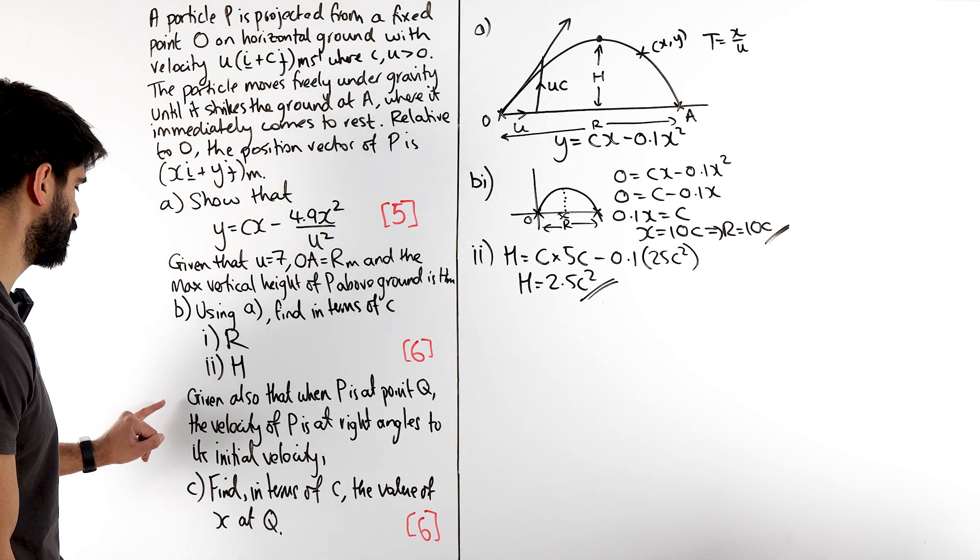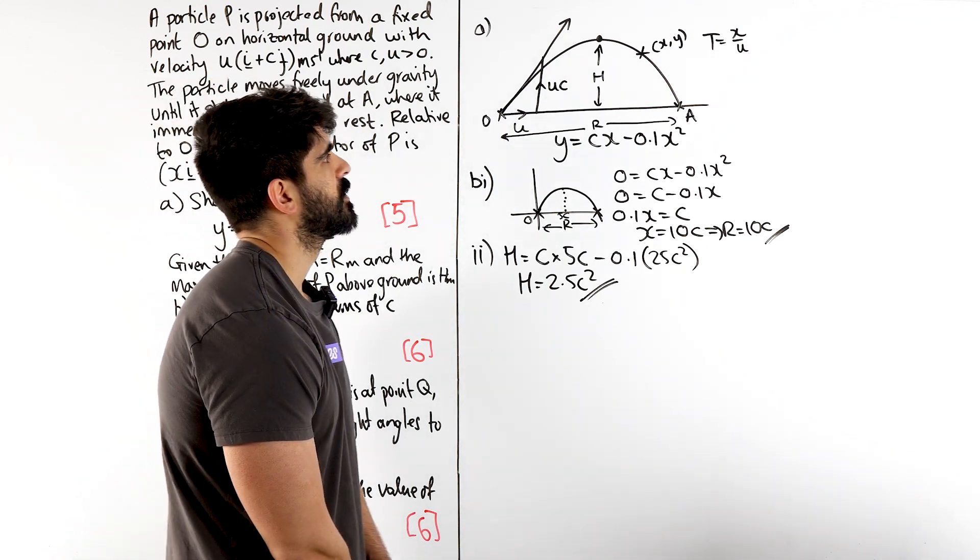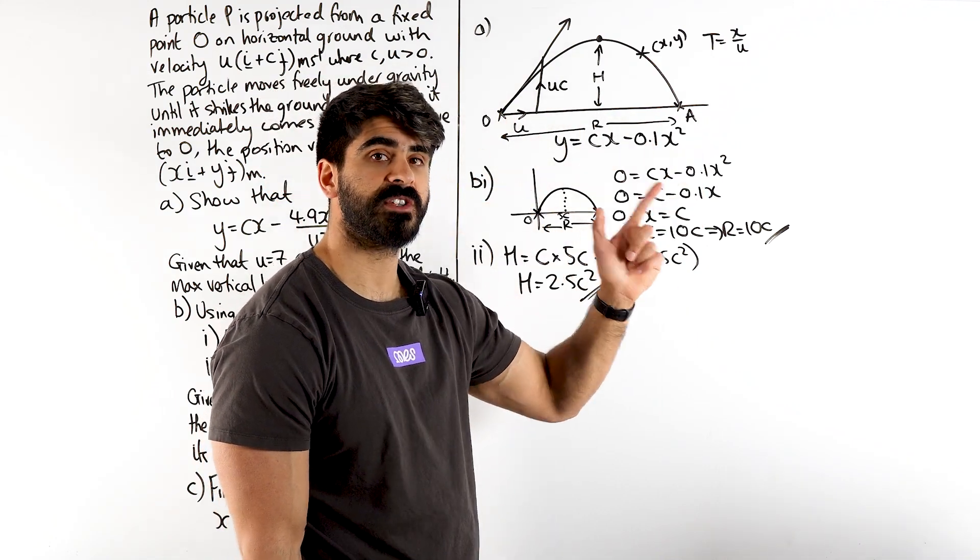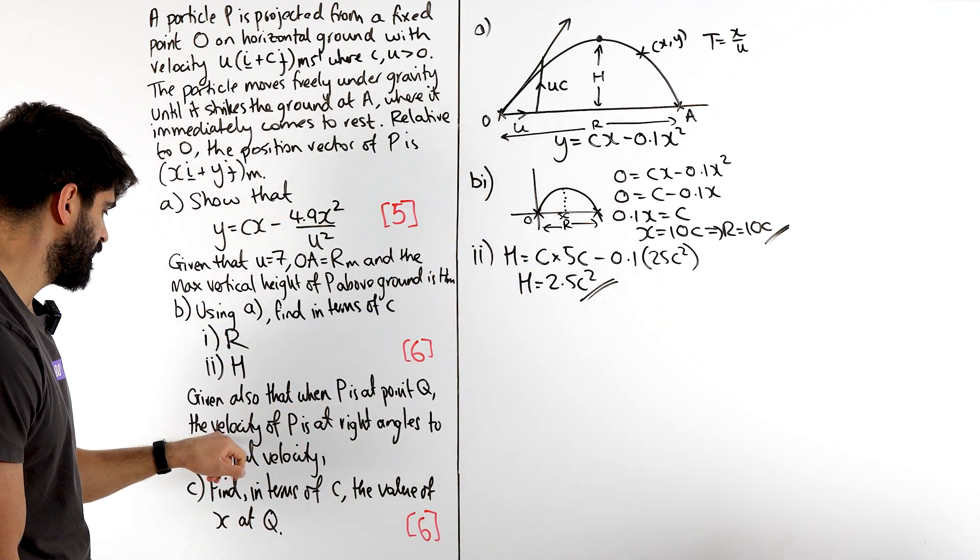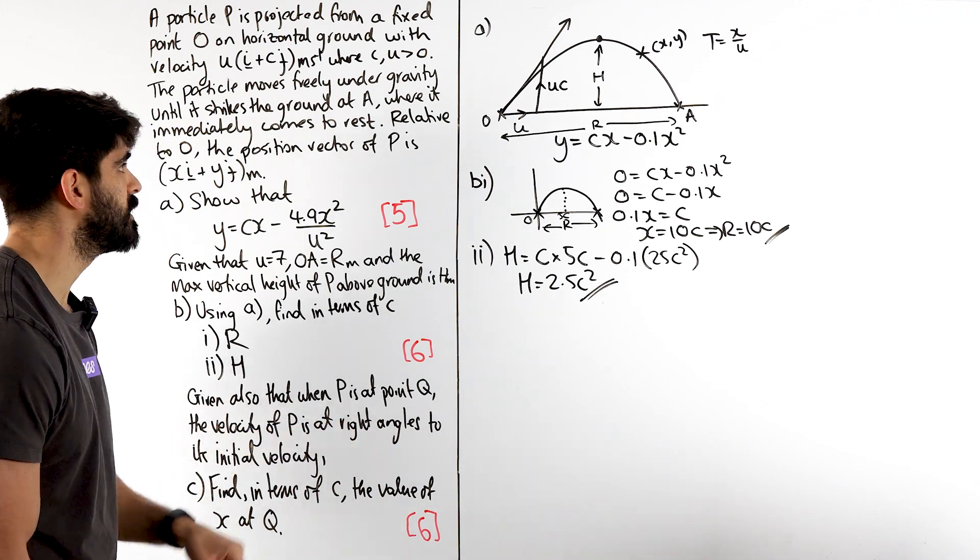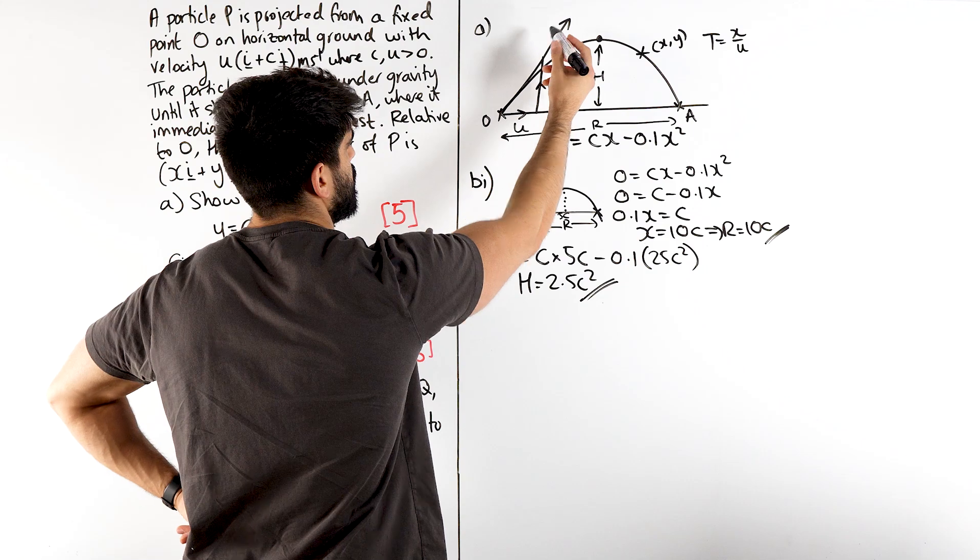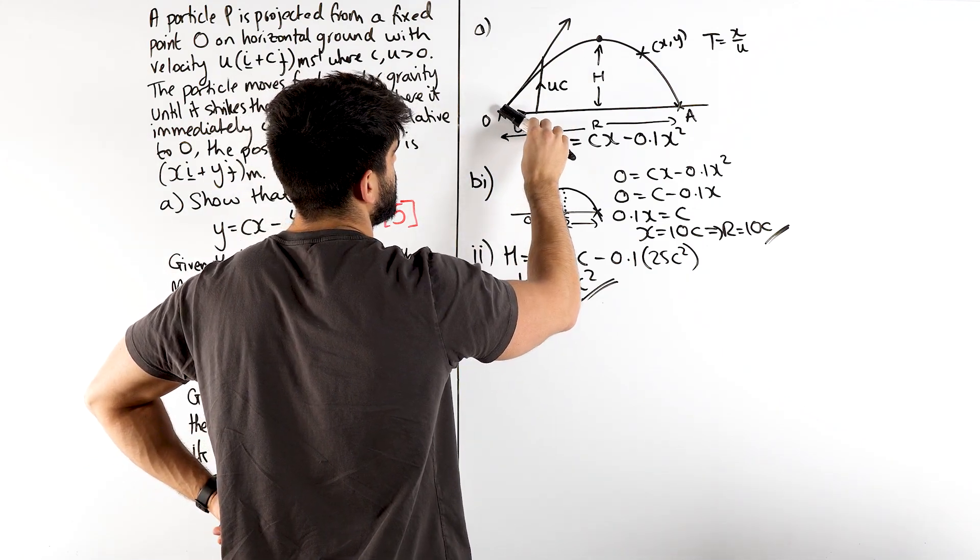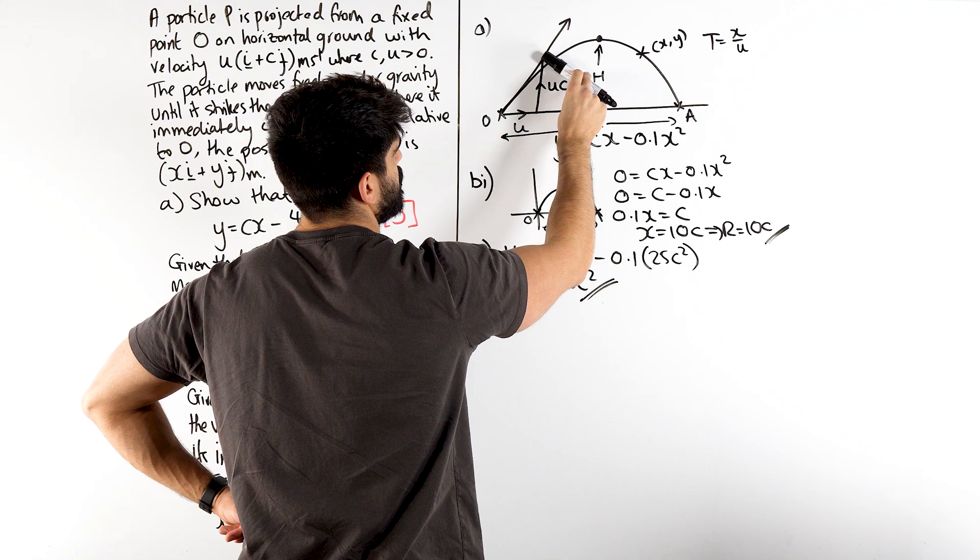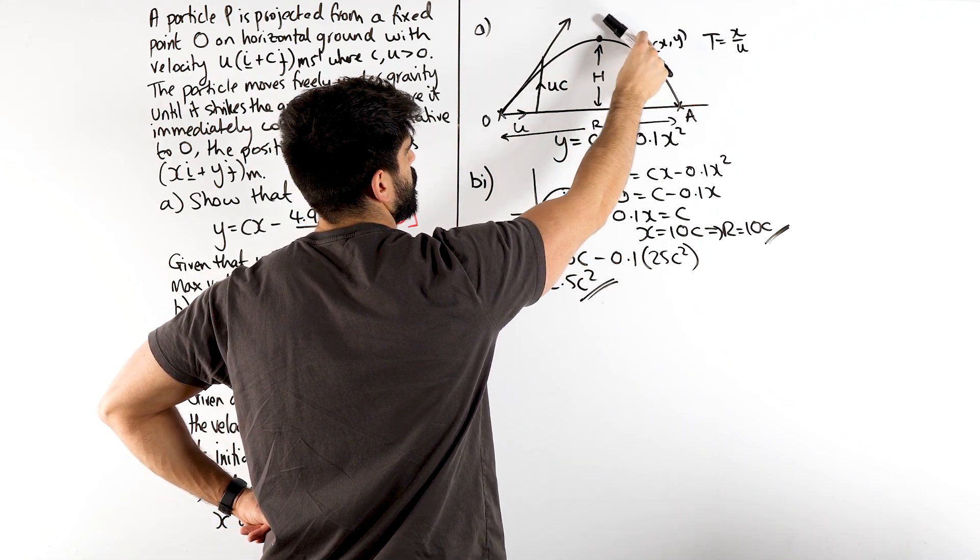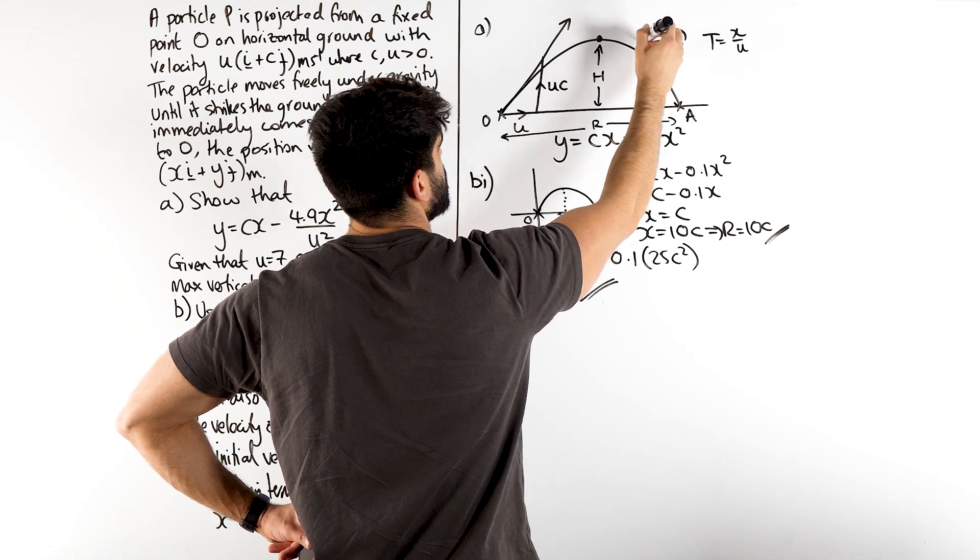Given also that when P is at some point Q, the velocity of P is at right angles to the initial velocity, find in terms of C, the value of X at Q. Okay. So, somewhere along this quadratic, the particle's velocity is at 90 degrees to what it was at the beginning. So, given that when P is at, the velocity of P is at right angle, so perpendicular to the initial velocity. Well, there's my initial velocity. Yeah, remember guys, this is your displacement. The velocity is always parallel to that. That's why it's a tangent here. We're looking for the point where the velocity would be perpendicular to this, 90 degrees. Now, what I'm going to do is move my pen to where it looks like it would be a tangent. It actually kind of looks like here where I put this. I'm just going to label that as being my Q.